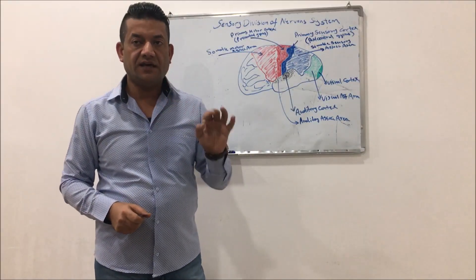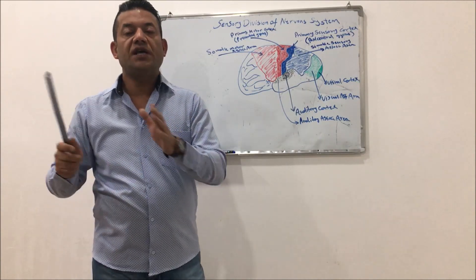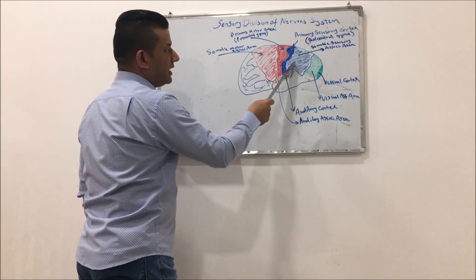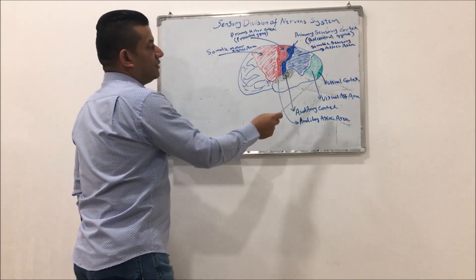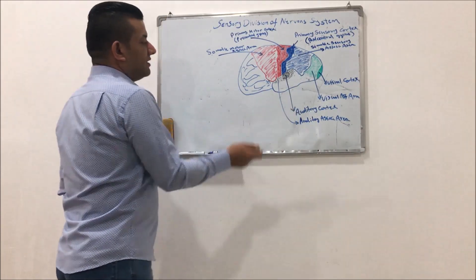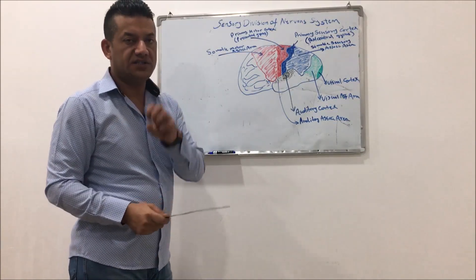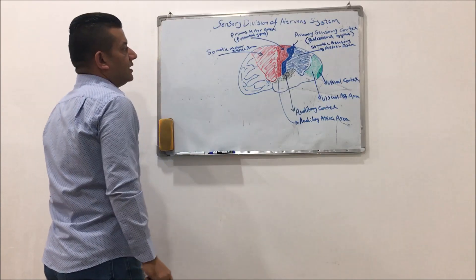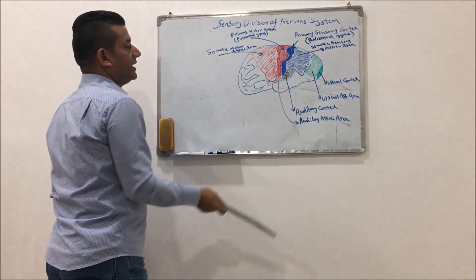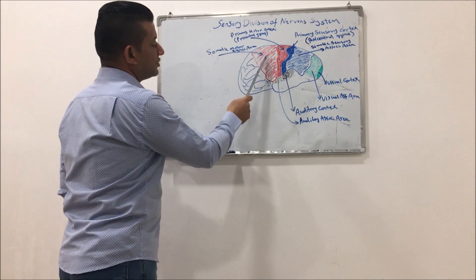Each sensory area within the cortex of the brain must be supplied by an association area. For example, the primary sensory area is adjacent to the somatic sensory association area. The visual cortex is adjacent to the visual association area. Similarly, the auditory cortex is adjacent to the auditory association area. The area highlighted in red color is the primary motor cortex, or pre-central gyrus, which is also adjacent to the somatic motor association area.